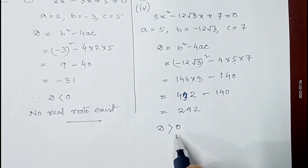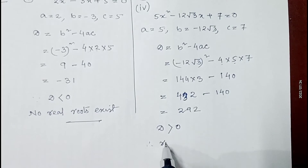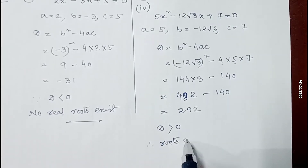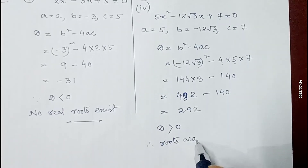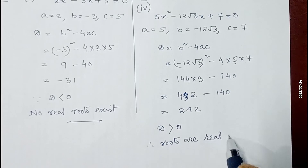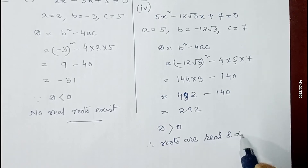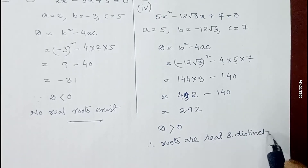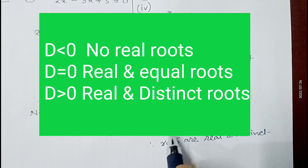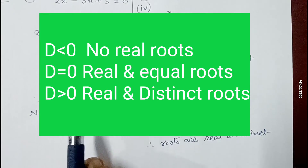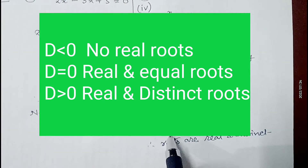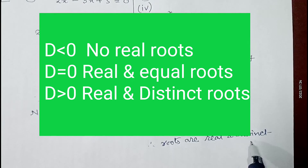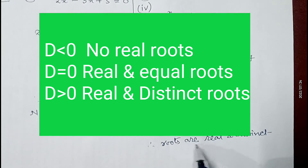Therefore, roots are real and distinct. As I told you in my previous video: if D < 0 then no real roots; if D > 0 then roots are real and distinct; and if D = 0 then roots are real and equal.